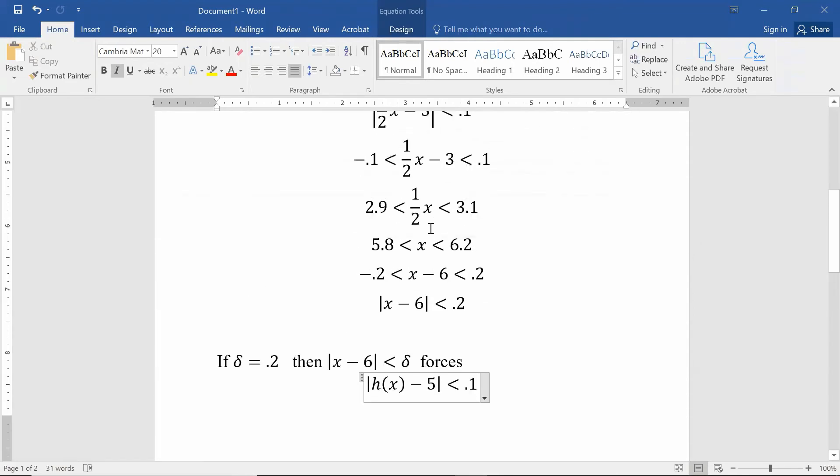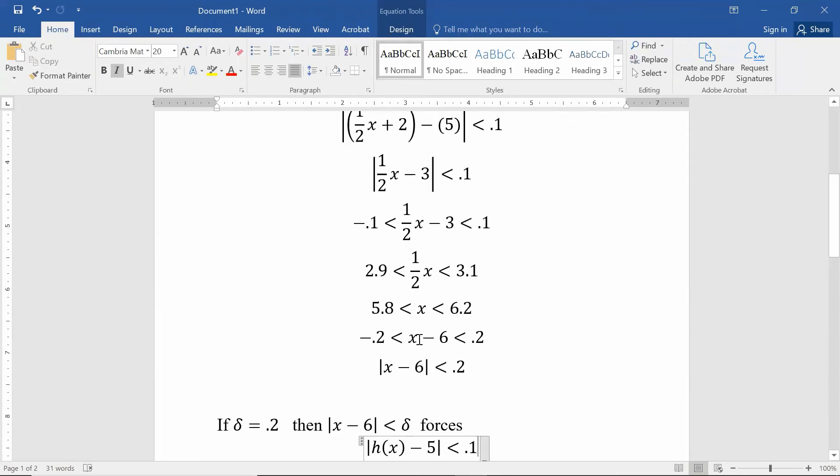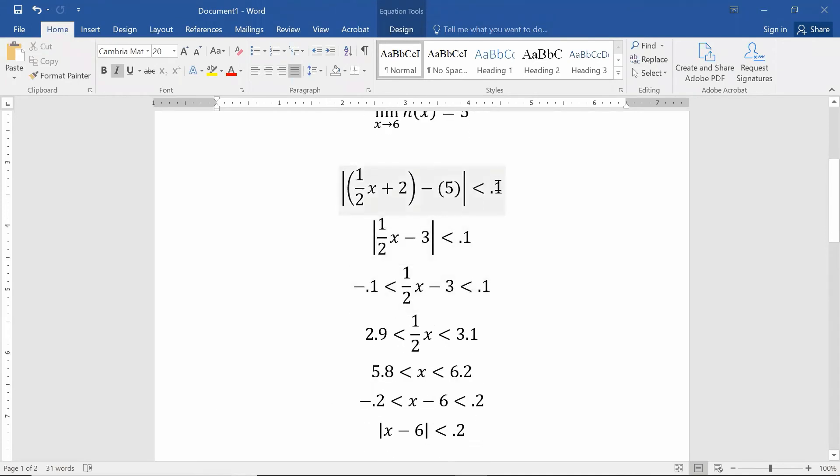Now if we go back up and change this 0.1 to 0.01, most things are going to carry on. So |h(x) - 5| less than 0.01 forces 1/2x - 3 to be less than 0.01, which means my 1/2x - 3 has to be between negative 0.01 and positive 0.01.